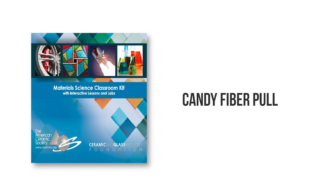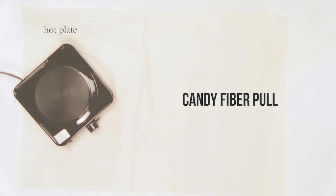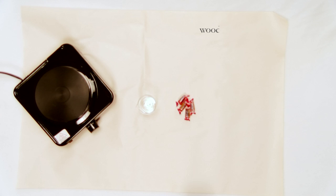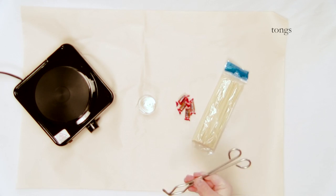The materials needed for this demonstration are one hot plate, one beaker, Jolly Ranchers, wooden skewers or popsicle sticks, and beaker tongs.